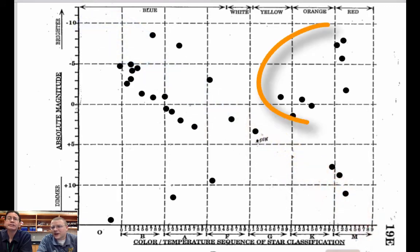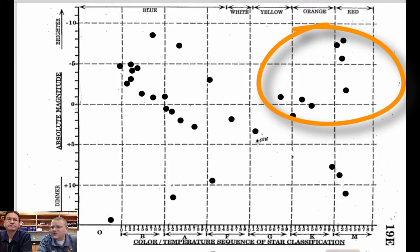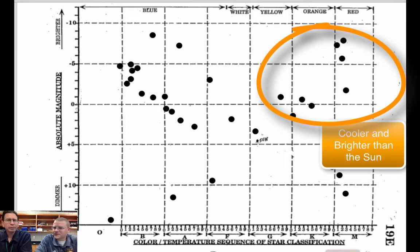Then over here we had some oddballs. If we were cold we should be dim but we have really cold stars that are really really bright. How could that be possible? Well we learned a couple of ways the stars can be brighter and one of those ways is by size. These are really big stars.